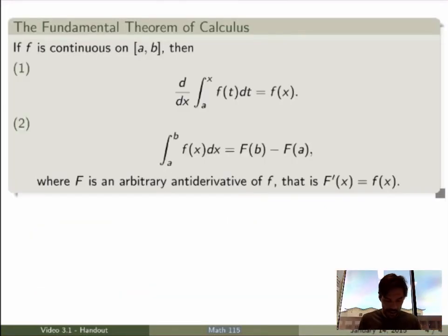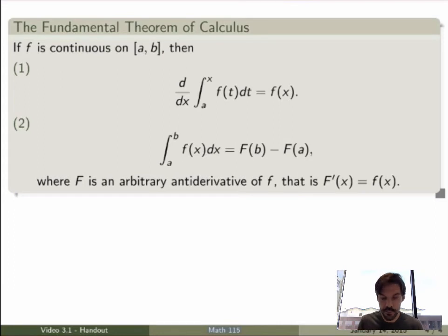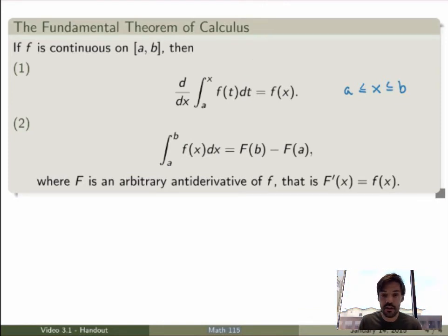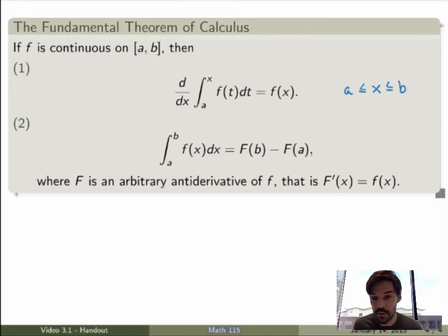Here is the full fundamental theorem of calculus. Pick any function f that is continuous over some closed interval [a, b]. Part 1 states that the derivative of the integral from a to x of f(t) dt is always equal to the original function f(x), for x between a and b. Part 2 is what we already know: the definite integral of f(x) dx from a to b equals capital F(b) minus capital F(a), where F is an arbitrary antiderivative of f.